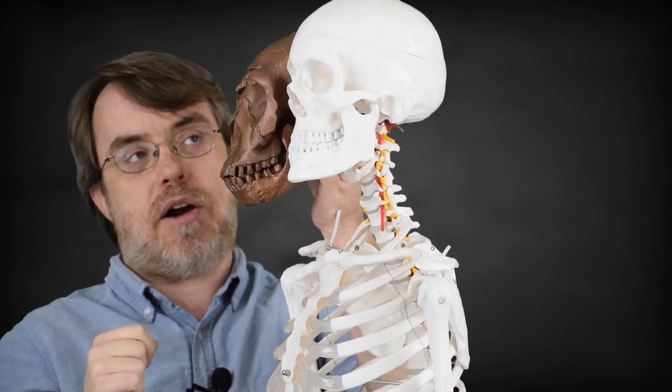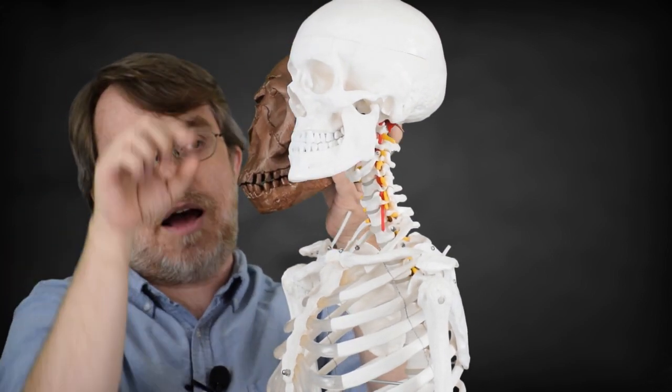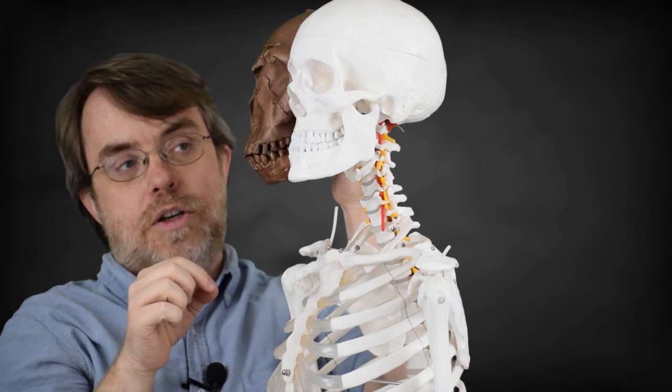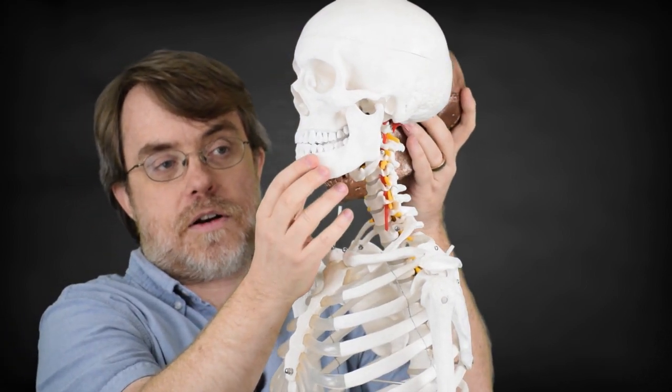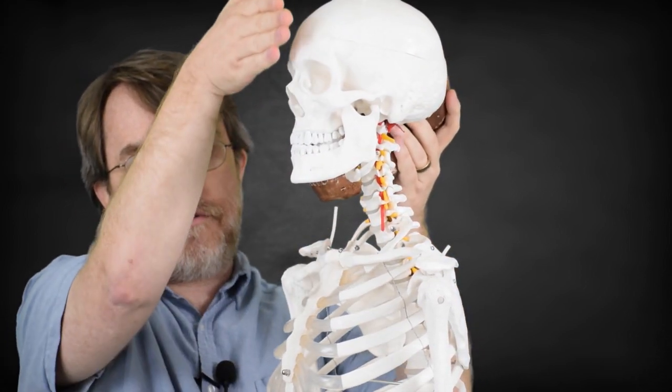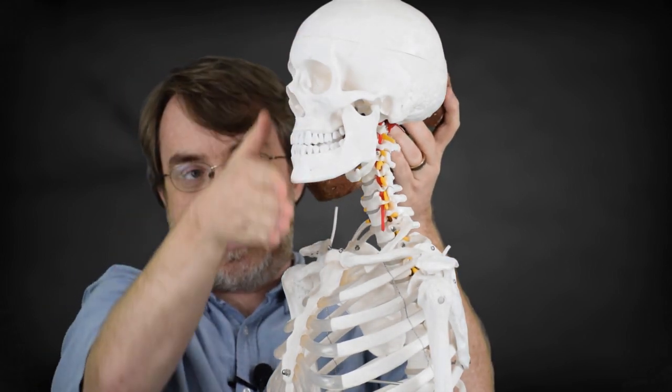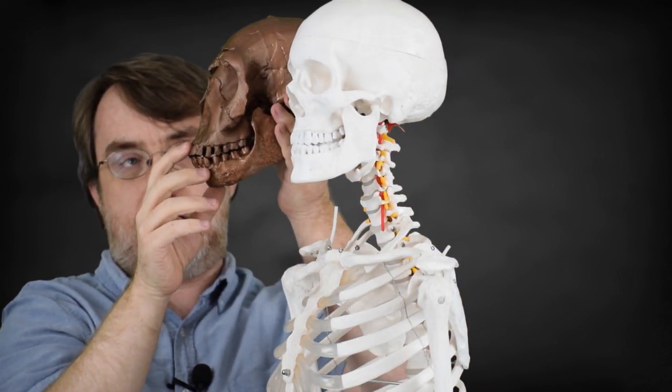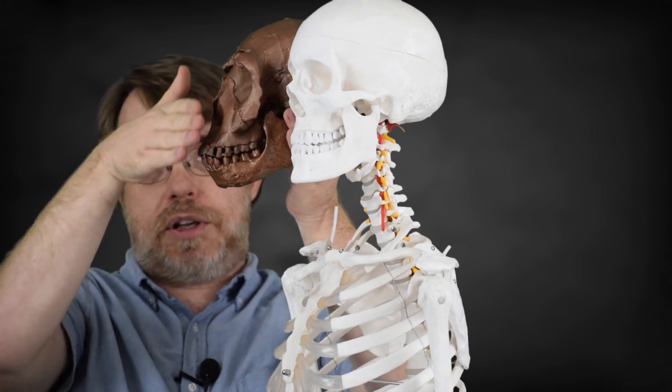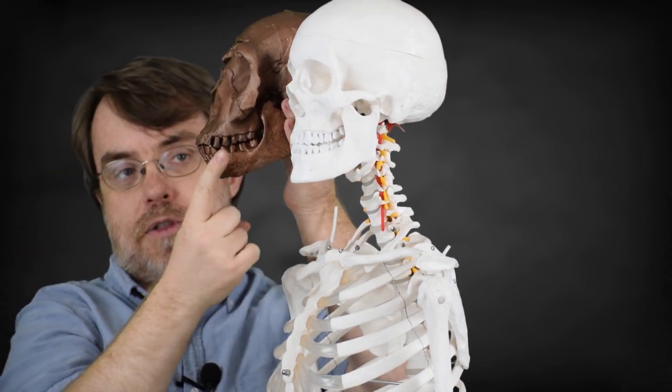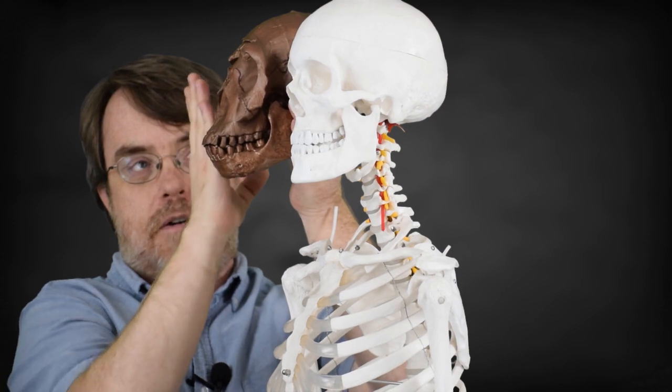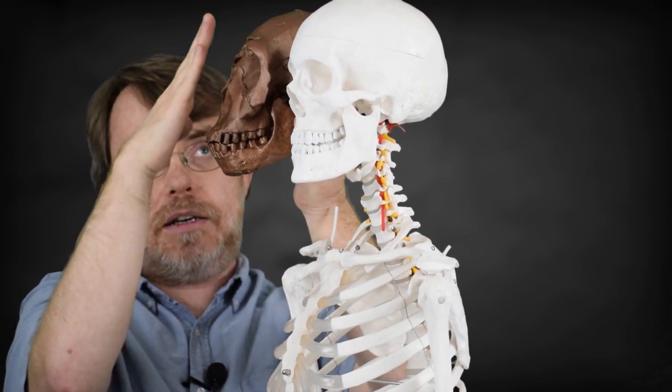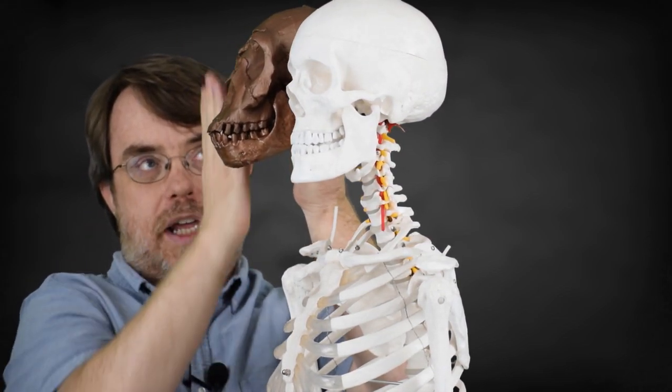And so he would have had a much bigger brow ridge and a much smaller brain and not much of a forehead. You can also see the modern human here tends to have a face that's pretty straight up and down, whereas Nariokotome boy clearly has a pretty big slant to his face. His mouth sticks way out from the plane of the vertical plane.